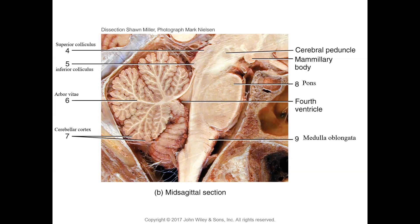Make sure you know the difference between cerebellar peduncles and cerebral peduncles. Here is the spinal cord, medulla oblongata, the pons, the midbrain, and the cerebral peduncles up here. This is the fourth ventricle filled with cerebrospinal fluid. Here are the superior and inferior colliculi — those paired nuclei in the quadrigemini area — and this is the tree-shaped arbor vitae: white matter surrounded by the gray matter of the cerebellar cortex.